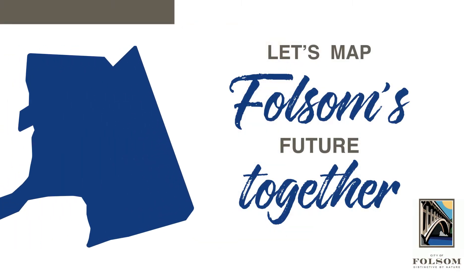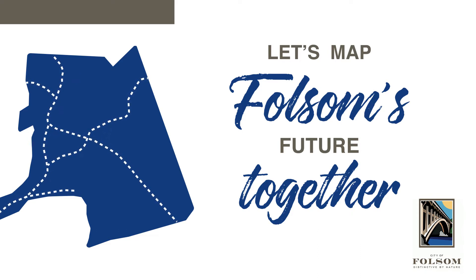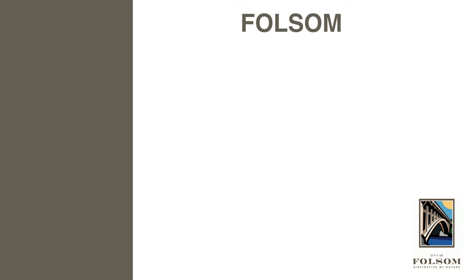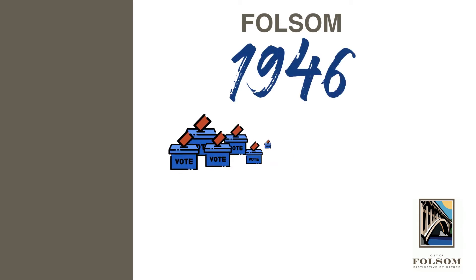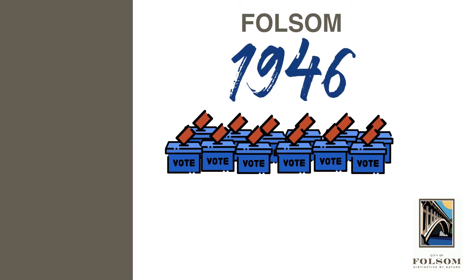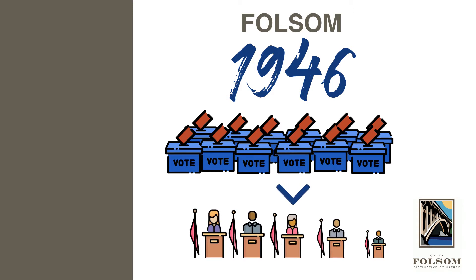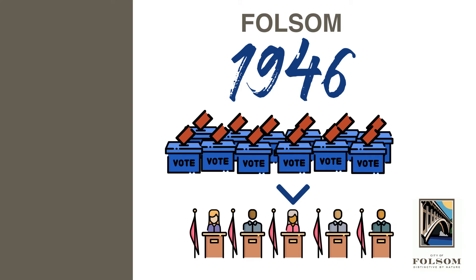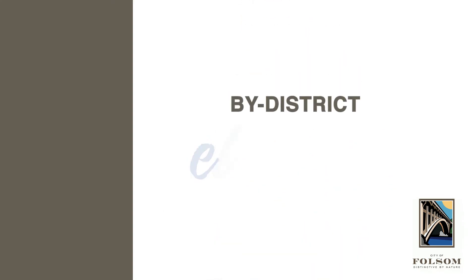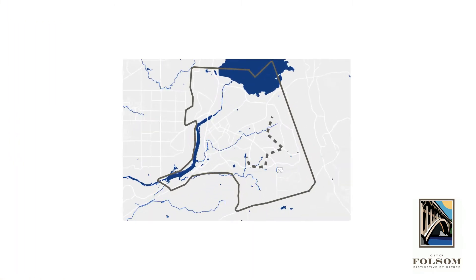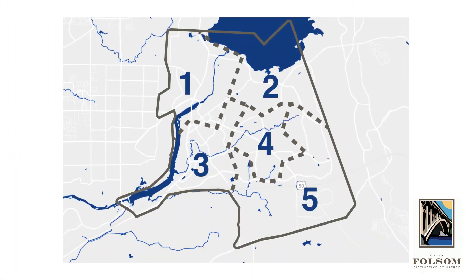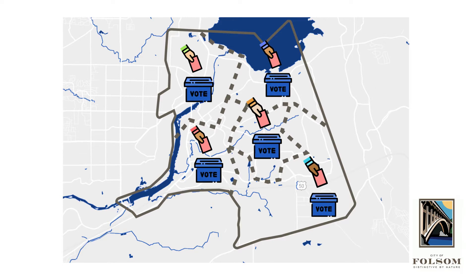The City of Folsom is in the process of changing how council members are elected and needs your help to plan and draw Folsom City Council districts. Since Folsom became a city in 1946, council members were elected through an at-large election system where registered Folsom voters elect five city council members regardless of where the candidates reside in the city. Under by-district elections, the city is divided into five districts and each voter within a district will cast one vote for a candidate living within that one district.